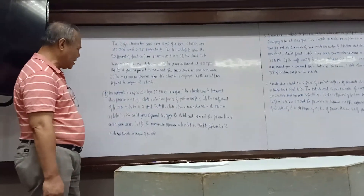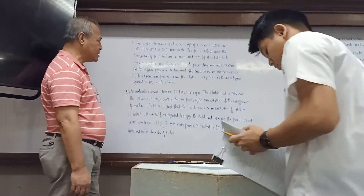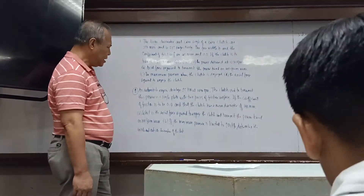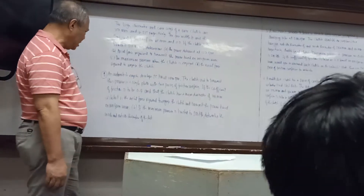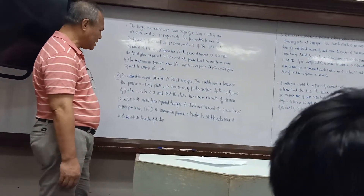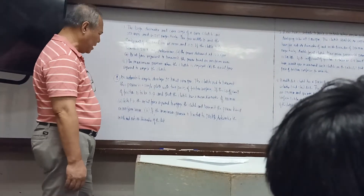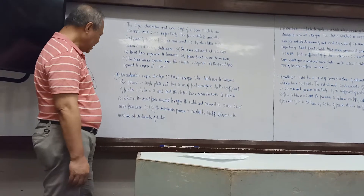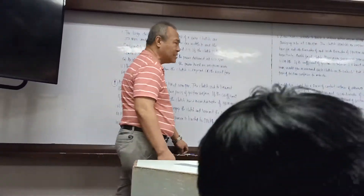This problem involves a single-plate clutch with two pairs of friction surfaces. Given a coefficient of friction of 0.4 and a mid-diameter of 190 mm, what will be the actual force required to engage the clutch? The problem is based on the uniform wear method. If the maximum pressure is limited to 12 kPa, determine the inside and outside diameter of the clutch.